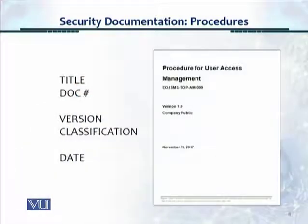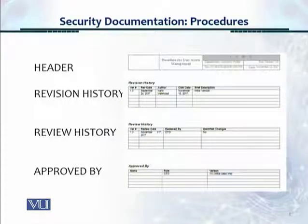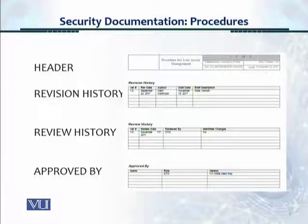Here is a layout for the front page of a sample procedure. It has a title — 'Procedure for User Access Management' — a document number, a version number, and a classification; in this case, Company Public, meaning everybody in the company can view it, and it has a date. This is the header section. The control page, usually the second page of the document, has a header, a revision history showing when it was reviewed, who is the reviewer, the distribution date, and a brief description. There's also a review history section and an approved by section.